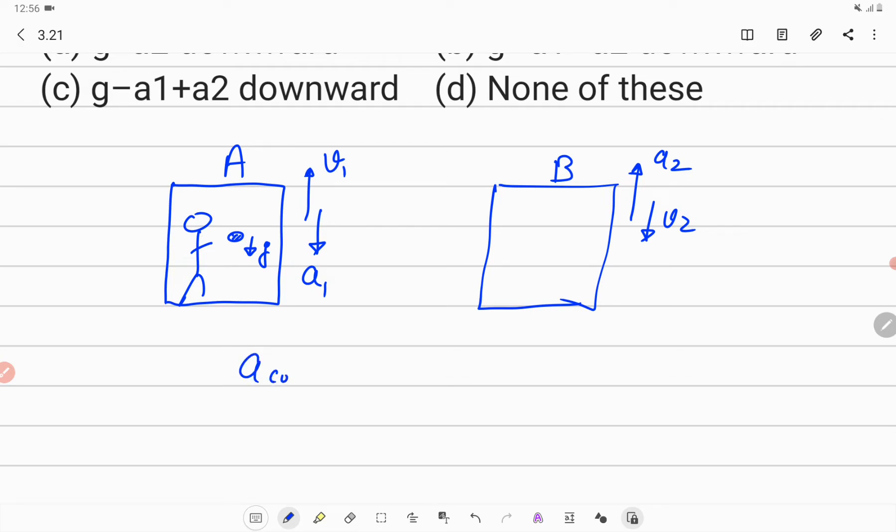So acceleration of coin with respect to B should be acceleration of coin minus acceleration of B. Let us assume upward direction is the positive direction.